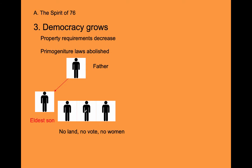Now let's talk about some new state constitutions. Once we declared independence, we didn't have 13 colonies anymore — we had 13 new states. Each colony had to throw away its old constitution, which was for when they were under the king with a colonial governor appointed by England. We needed completely new constitutions for independent states. All 13 colonies wrote new constitutions, and for the most part they're all republics with elected representatives. Many states also lowered property requirements to vote.